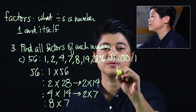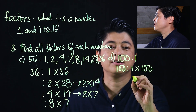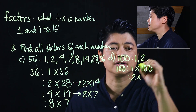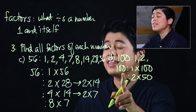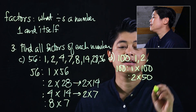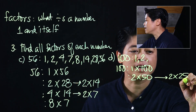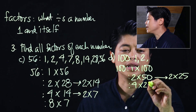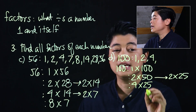Doing the same process with 100: we know 1 is a factor, so we start with 1 times 100. Then 2 is also a factor, giving 2 times 50. Clearly 3 is not a factor because when you add the digits it cannot be divided by 3. So we continue: 2 times 25 gives us 4 times 25, making 4 a factor.